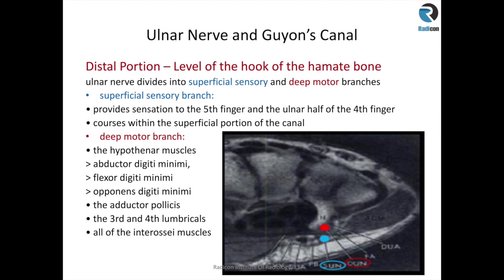More distally, at the level of the hook of the hamate, the ulnar nerve divides into superficial and deep parts. The superficial is the sensory part and the deep is the motor branch. The motor branch supplies quite a few muscles within the palm: abductor digiti minimi, flexor and opponens digiti minimi, adductor pollicis, and some lumbricals and interossei muscles.